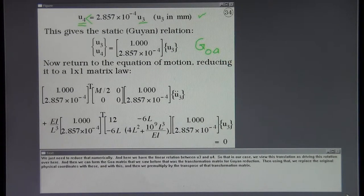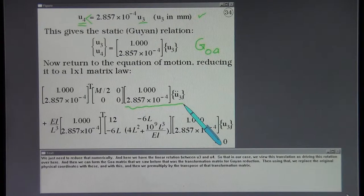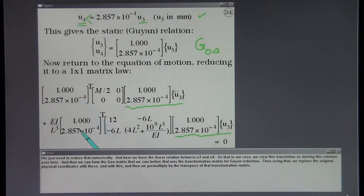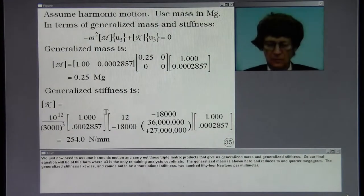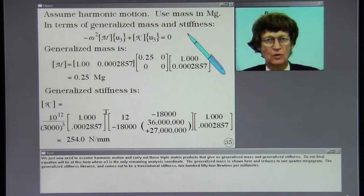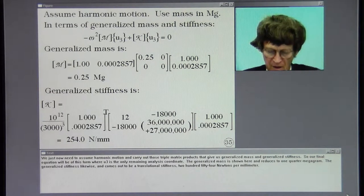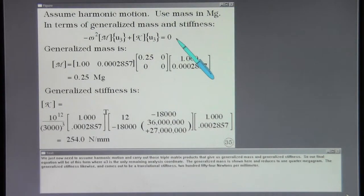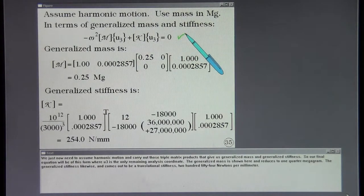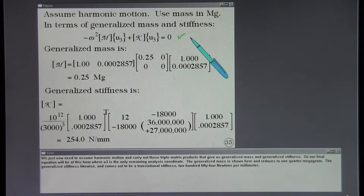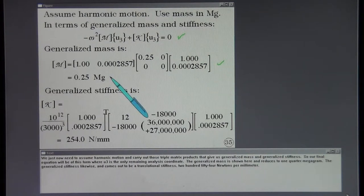So in our case we view this translation as driving this rotation over here. And then we can form the Guyan matrix that we saw before, that was the transformation matrix for Guyan reduction. And then using that we replace the original physical coordinates with these. And then we pre-multiply by the transpose of that transformation matrix. We just now need to assume harmonic motion and carry out those triple matrix products that give us generalized mass and generalized stiffness. So our final equation will be of this form where U three is the only remaining analysis coordinate. The generalized mass is shown here and reduces to one quarter megagram. The generalized stiffness likewise and comes out to be a translational stiffness 254 newtons per millimeter.